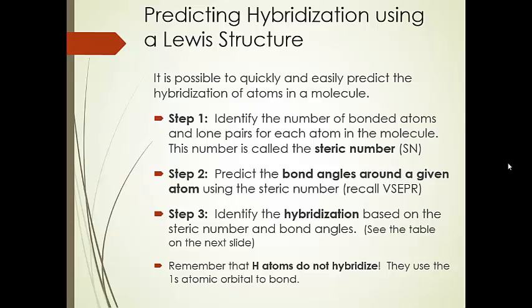It's pretty easy to predict hybridization of atoms in a molecule from a Lewis structure. First, make sure you have the most preferred Lewis structure — the best one in terms of minimizing formal charge and satisfying octets. Then the first step is to determine the steric number for each non-hydrogen atom by adding together the number of bonded atoms and lone pairs for each atom in the molecule.